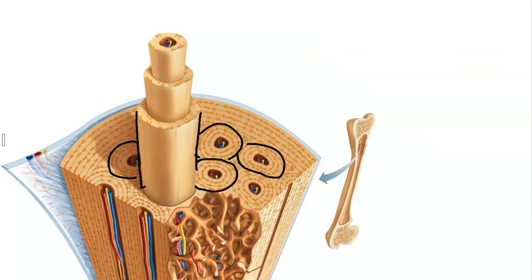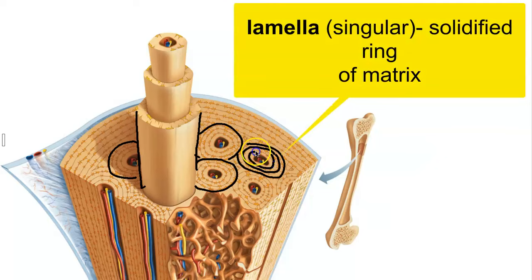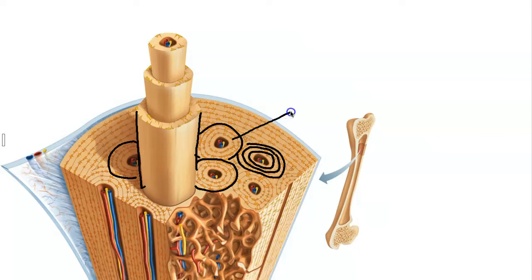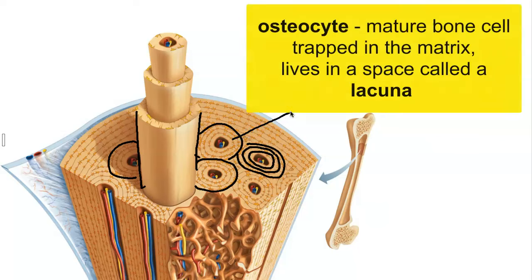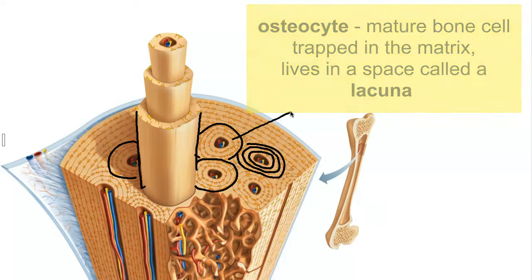Taking a closer look at the structure of one osteon, you might notice that it looks like a tree trunk — it's made up of concentric rings. Those are rings of matrix called lamellae. In between the lamellae, these little yellow cells are the osteocytes. The osteocytes live in a little space called a lacuna, wedged in between the lamellae.